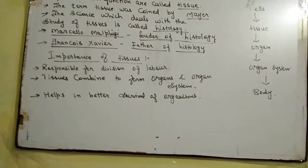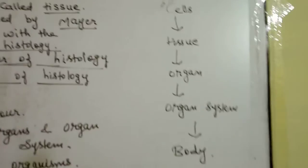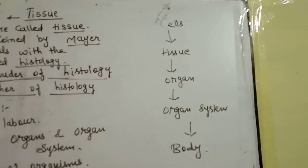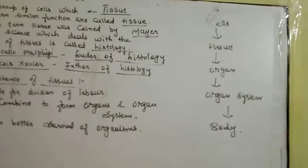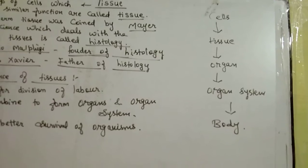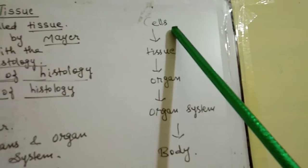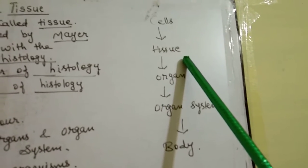Now I am going to tell you about the importance of tissue. Tissue is important in our body and in living organisms. Although tissue is a very small and simple term, it plays a great role in our body. A group of cells combine and perform similar functions to form tissue.